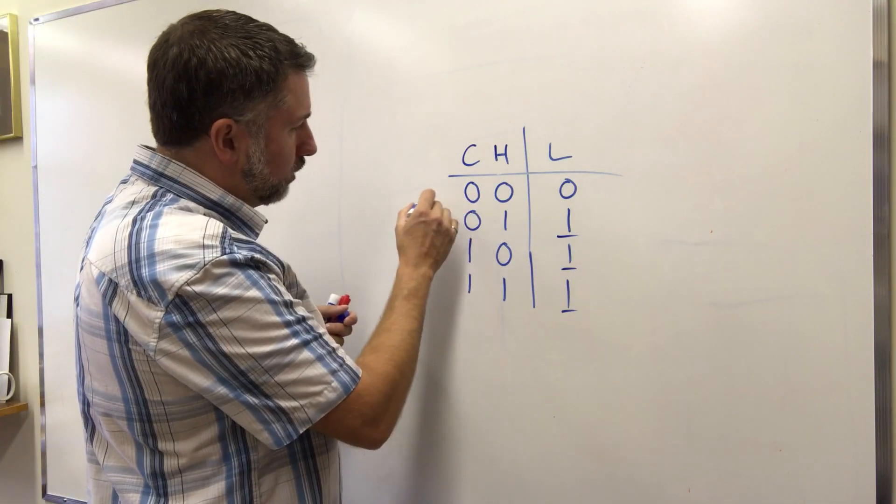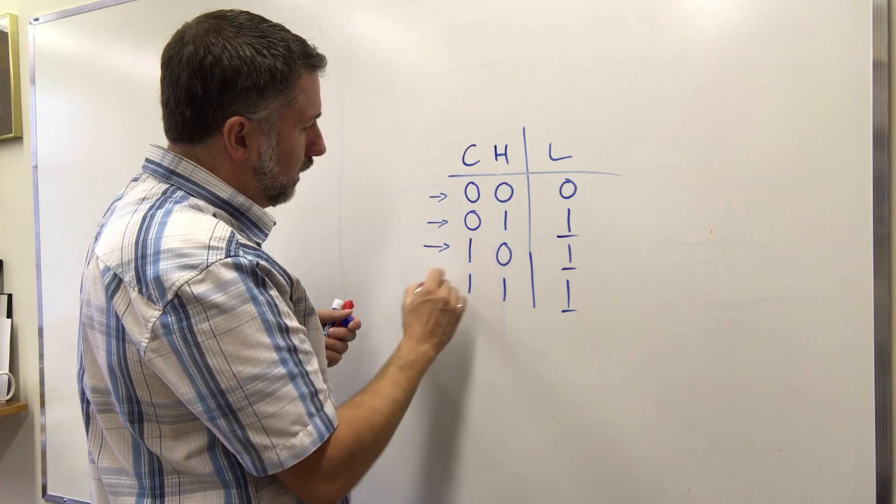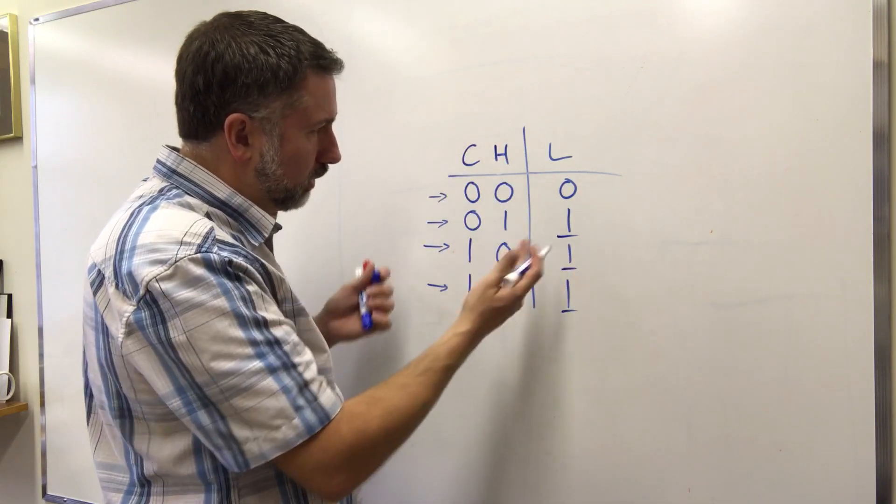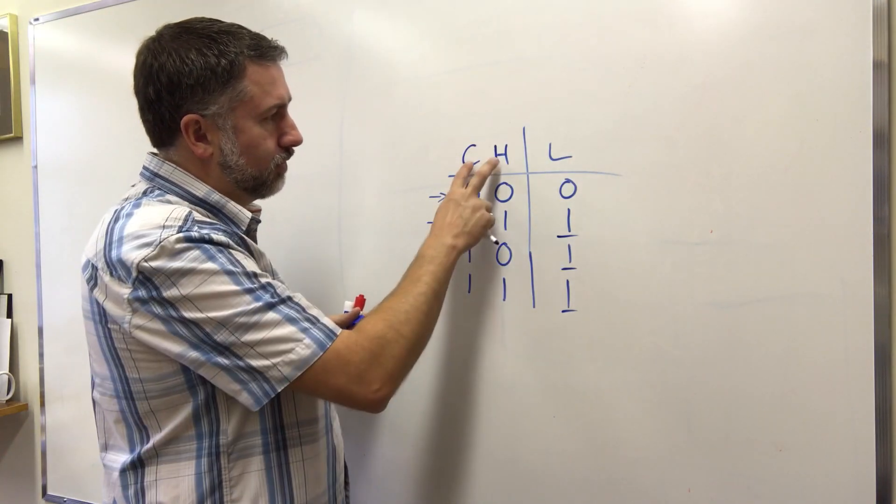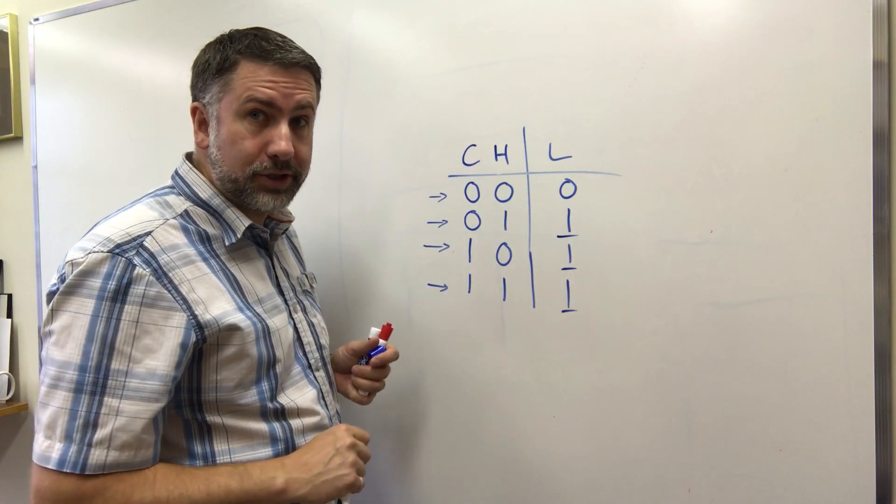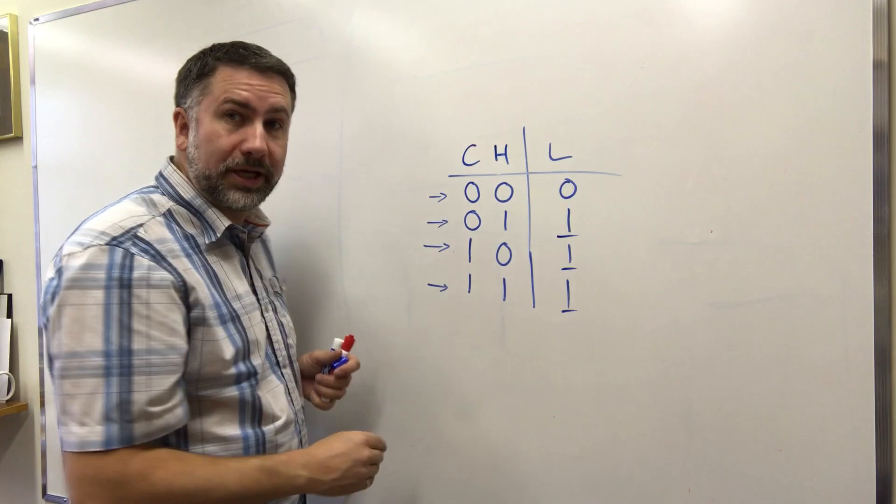Every possible input combination in a circuit, in a function, the number of possible combinations depends on the number of inputs. If there are two inputs, there are four combinations. If there are three inputs, there are going to be eight combinations.